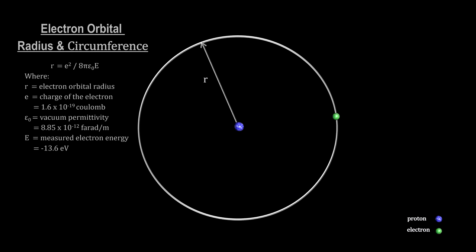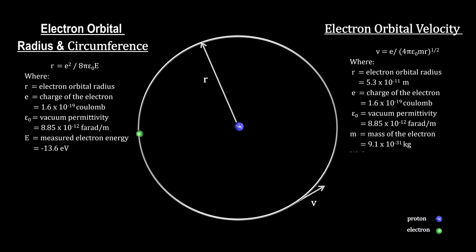Just as we can use gravitational and centripetal forces to calculate the radius and velocity of a planet around the Sun, we can use electric and centripetal forces to calculate the radius, circumference, velocity, and revolutions per second of an electron around the nucleus.